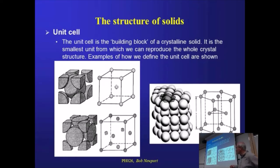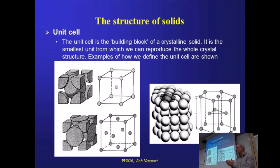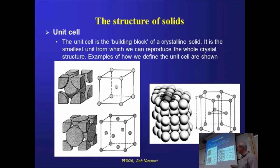For the face-centred cubic, the same argument applies. On the corners we've got one eighth of an atom, because it's shared with the unit cells next to it. And on each of the faces we've got half an atom, because it's also shared with the unit cell abutted against that particular face. So we've got 1 atom from the corners — 8 eighths — and we've got 6 over 2 atoms from the faces of the cube. So 1 plus 3: we've got 4 atoms in total associated with an FCC unit cell. And those are quite important calculations.